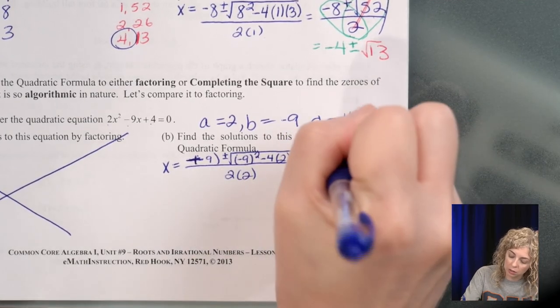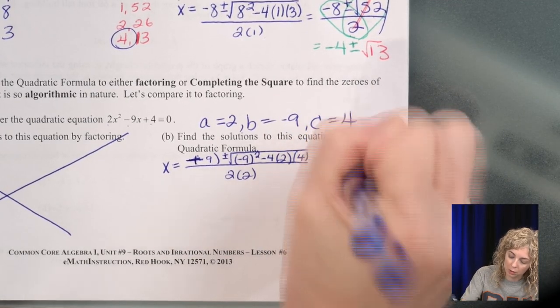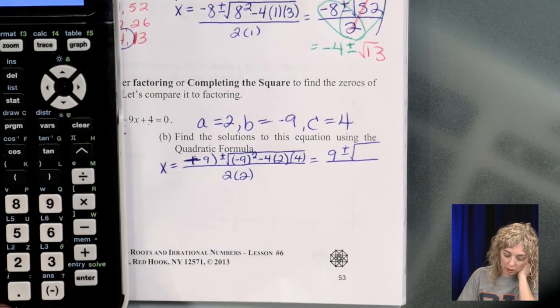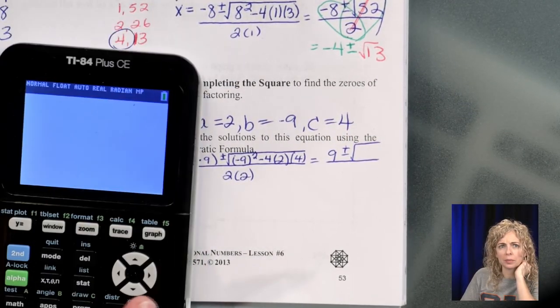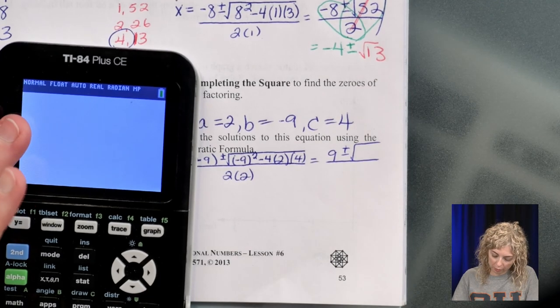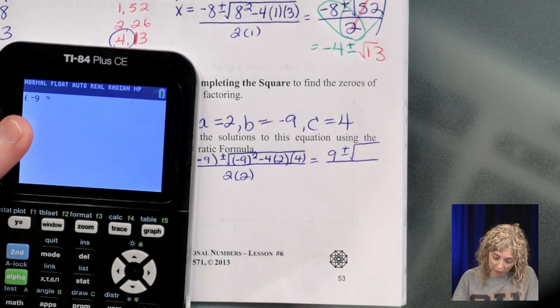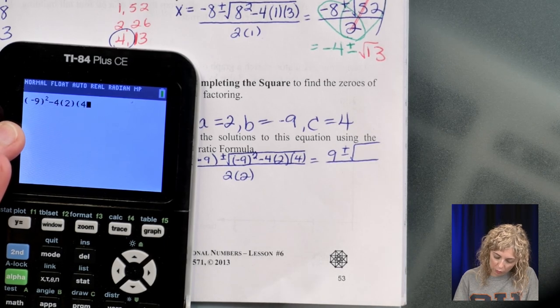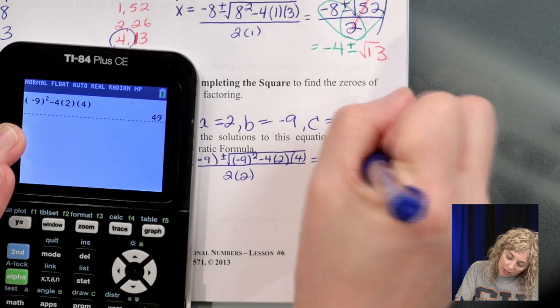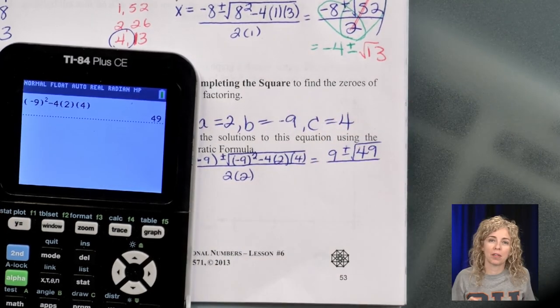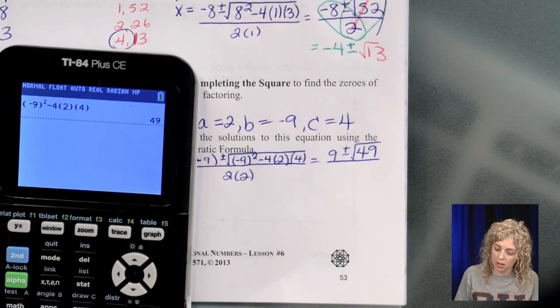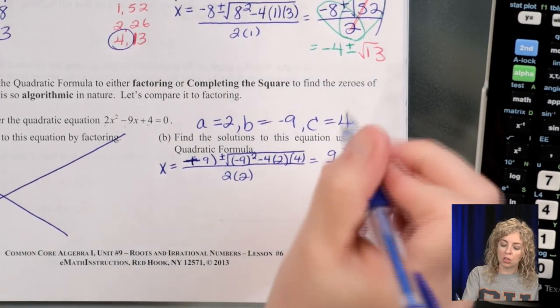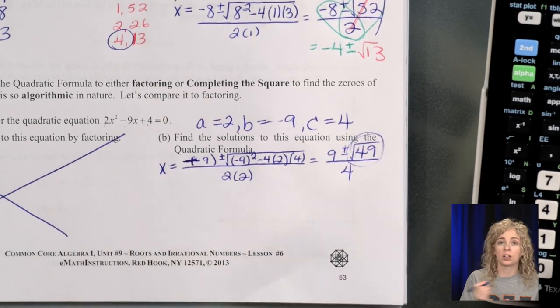So draw our long line, so it's going to be 9 plus or minus, and remember for the radical I want you to go to the calculator. All right, so let's put this under. Remember negative squaring, you have to put in parentheses. So negative 9 squared minus 4 times 2 times 4, we get 49, which is friendly or perfect square. Yay! And then 2 times 2, 4.